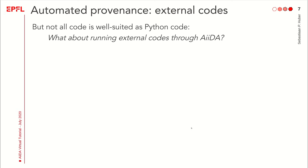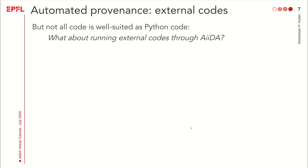Not all code is well suited as Python code. Often you want to run an external executable on your local machine or on a remote cluster. To run external codes through AIDA while still keeping provenance, you need what's called a calculation plugin. How to implement such a plugin is not the focus of this talk — you'll see that in a later stage of the tutorial. But imagine we already have an executable — a bash script that sums two numbers — and we've already created such a plugin called ArithmeticAddCalculation.